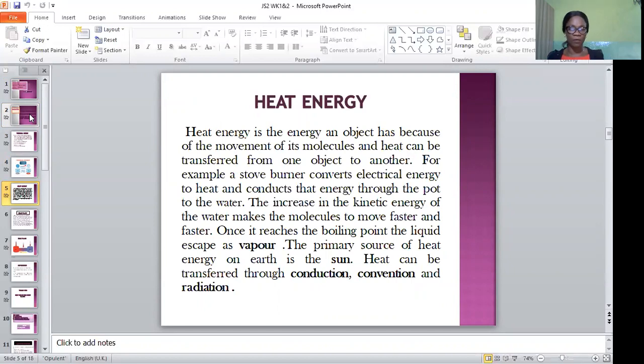What is heat energy itself? Heat energy is the type of energy an object has because of the movement of its molecule. And heat energy can be transferred from one object to another. For example, a stove burner converts electrical energy to heat and conducts that energy through the pot to the water. The increase in the kinetic energy of the pot then makes the molecule to move faster. Once it reaches the boiling point of the liquid, which is 100 degrees Celsius, the liquid will escape as vapor. The primary source of heat energy on earth is the sun, and heat can be transferred through three means: conduction, convection, and radiation.